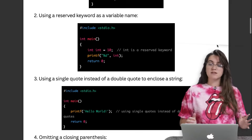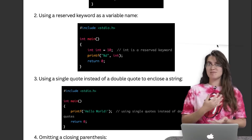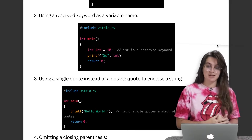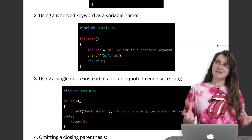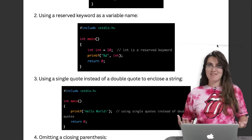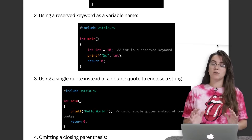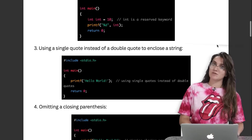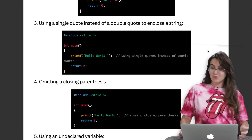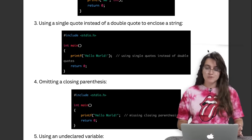The second common mistake is using a reserved keyword as a variable name. There are some words specific to the C language — for example, 'int'. If we try to create a variable called 'int', that won't work because it's already a keyword. We also can't use 'return' or 'printf' as variable names. The third example is using single quotes instead of double quotes to enclose a string — in C, we need double quotes.